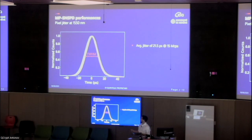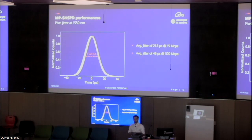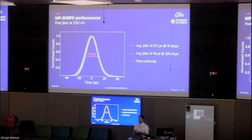We characterized the jitter of the detectors. At low count rates — 15 mega counts per second — we achieve 21 picosecond jitter at full width at half maximum. We also studied how jitter evolves with increasing detection rate. All pixels are very uniform, so this detector really performs as one detector even though it is composed of 14 individual elements.